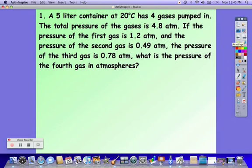In this problem, they have four gases in a 5 liter container at 20 degrees Celsius. Those two values do not matter. Our total pressure is going to be equal to the pressure of gas 1 plus gas 2 plus gas 3 plus the pressure of gas 4. The thing to watch out for is all the pressures need to be in the same unit. In this case, they were all given in ATM. So the total pressure is 4.8 ATM.